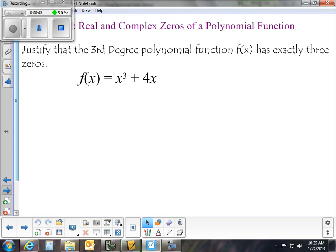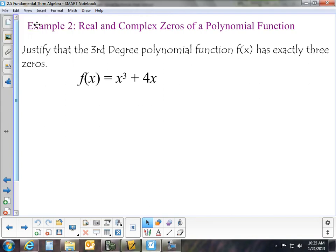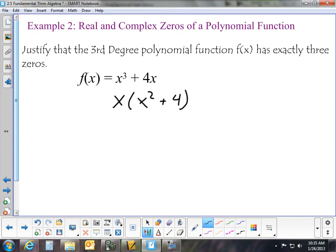So here's a problem that we can use as an example. Justify that the third degree polynomial function f(x) has exactly 3 zeros. So we need to find all 3 zeros. So we'll go ahead and look at this, and we'll try and factor what we can. I can see that I can factor out an x to start with, giving x squared plus 4. If I have x squared plus 4, I can see that I have one of the zeros, and now I just got to find the other one.